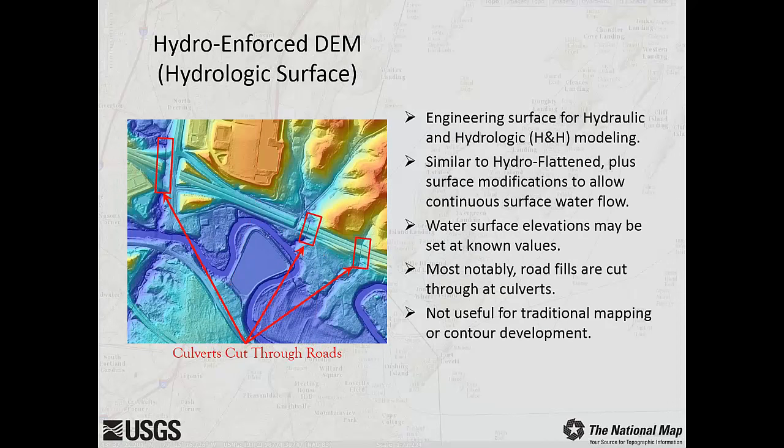So far, we have discussed four types of topographic DEMs. Now let's look at the two types of hydrologic DEMs. The hydro-enforced DEM is a surface used by engineers for hydraulic and hydrologic modeling. Although similar to the hydroflattened DEM, it has additional surface modifications to allow water to flow across the surface as it does in the real world. The most notable modification is that road fills are cut through at drainage culverts. Notice the cuts in the road surfaces in the image, allowing water to flow across the surface. This representation of hydro-enforcement is critical for accurate modeling, but not used for traditional mapping purposes or creation of topographic contours.